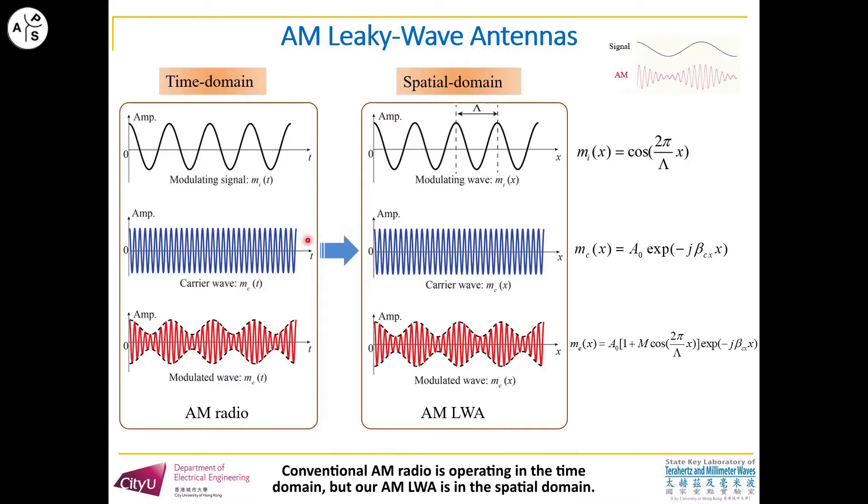Conventional AM radio is operating in the time domain, while AM leaky antenna is in the spatial domain.